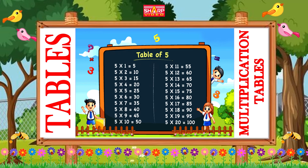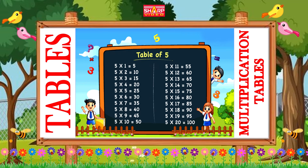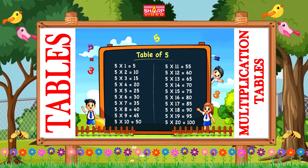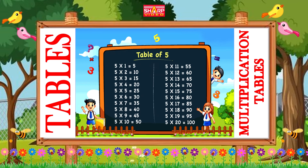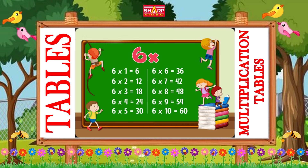Five sevens are thirty-five, five eights are forty, five nines are forty-five, five tens are fifty, five elevens are fifty-five, five twelves are sixty.